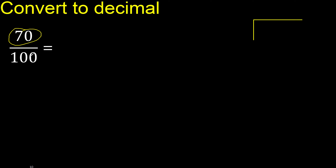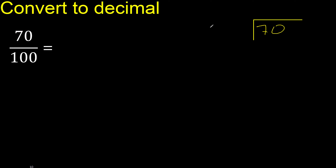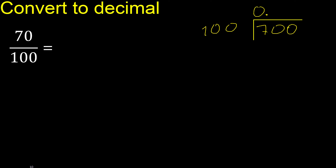Divided: 70 divided by 100. 70 is less, therefore complete with 0 and here 0 point. Point only once. Ok, is not less, ok.